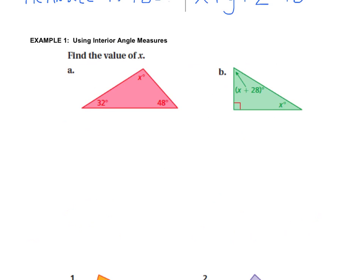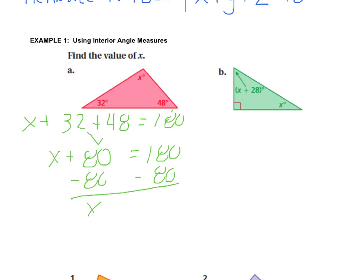In the triangle here, we are trying to find the value of X. We have an X, the second angle is 32 degrees, and the third angle is 48 degrees. All of those add up to 180 degrees. We can combine like terms: X plus 80 equals 180. Subtract 80 from both sides to isolate X, so X must be 100 degrees.